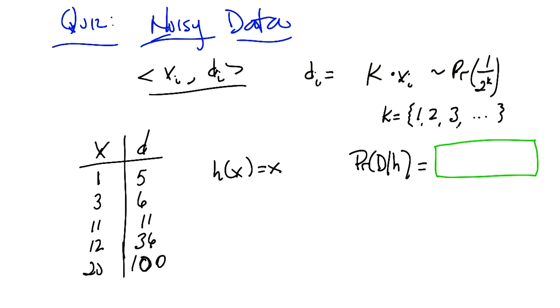So k is one of the counting numbers, 1, 2, 3, 4, 5, 6, 7, 8, and so on and so forth. And the probability that you actually get any one of those multiples of x of i is equal to 1 over 2 to the k.